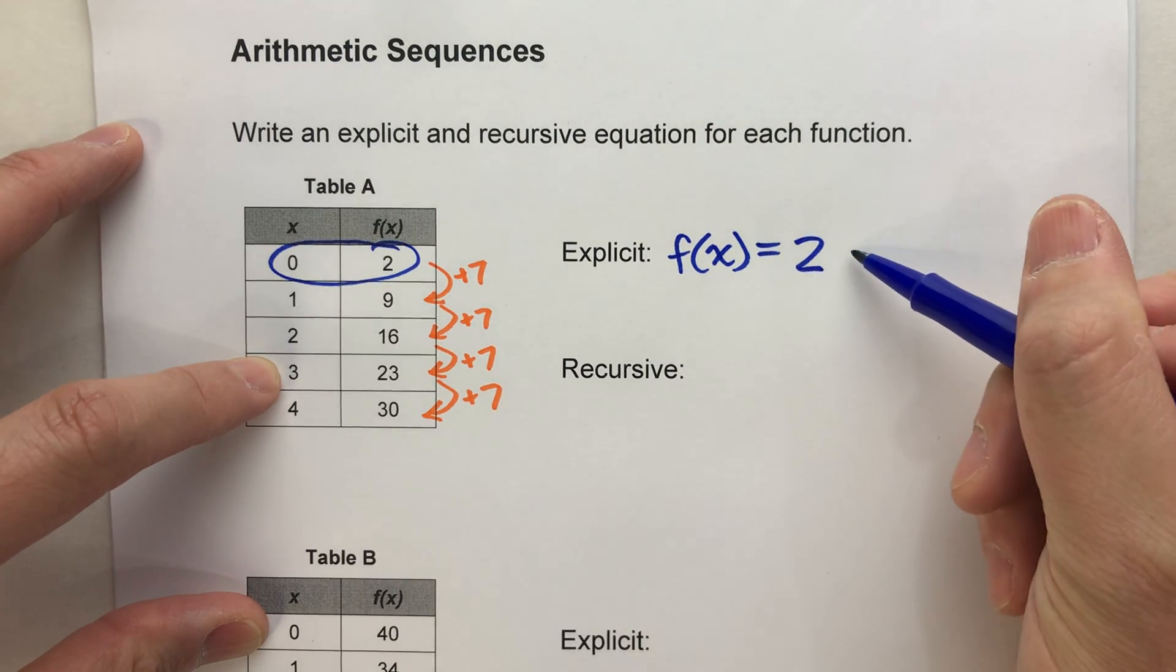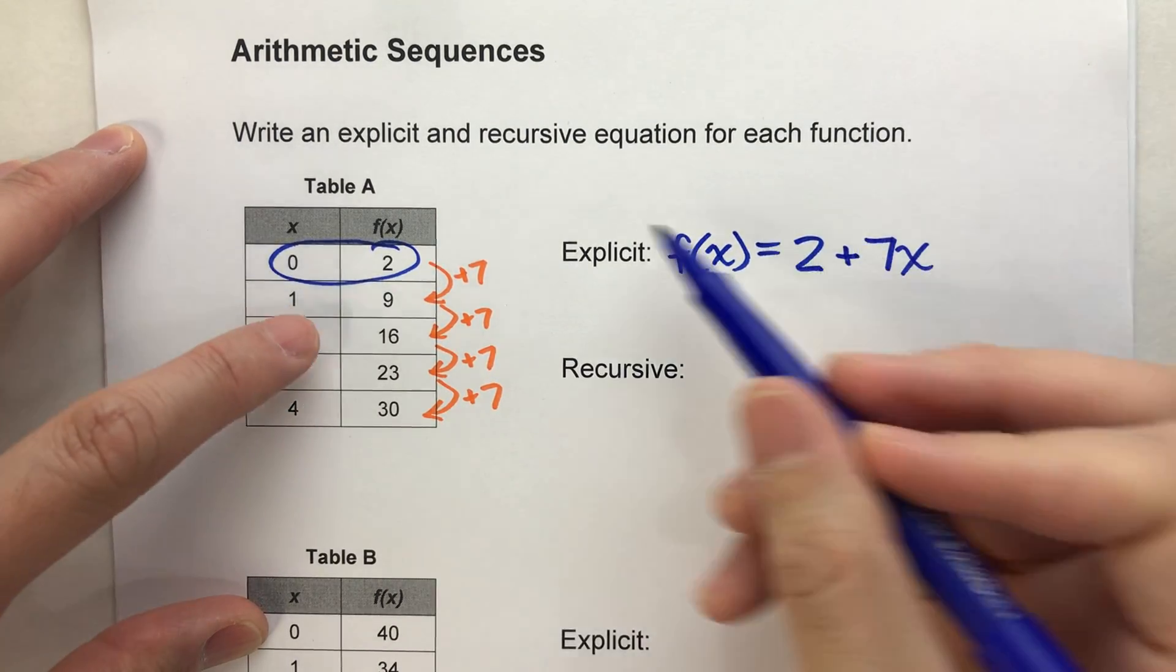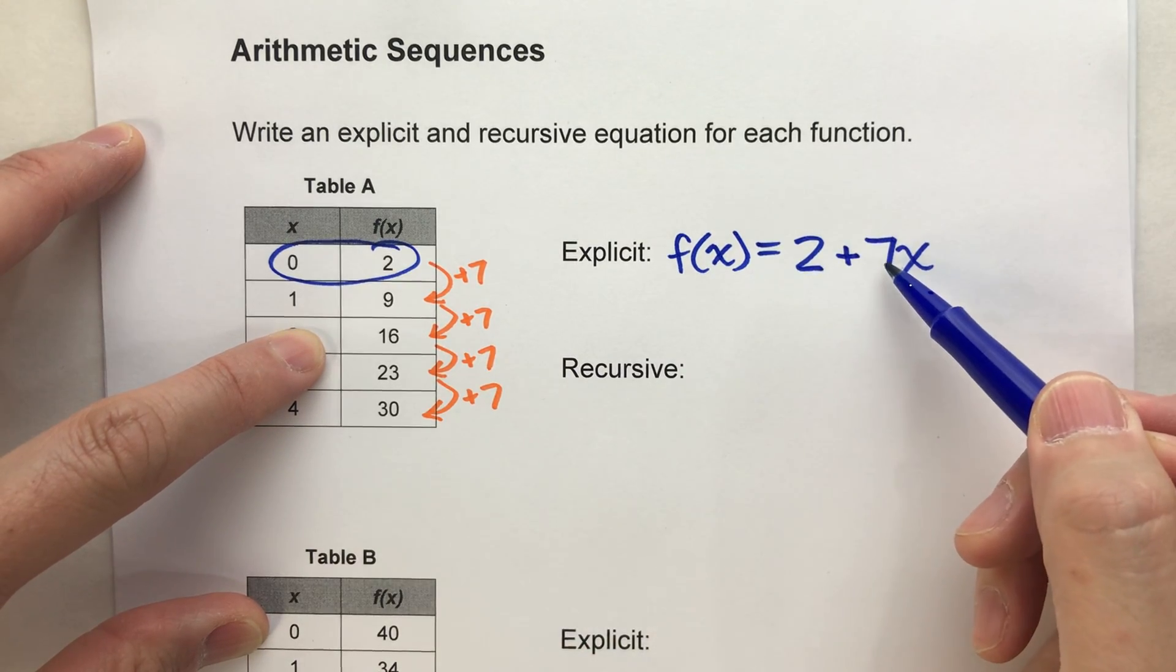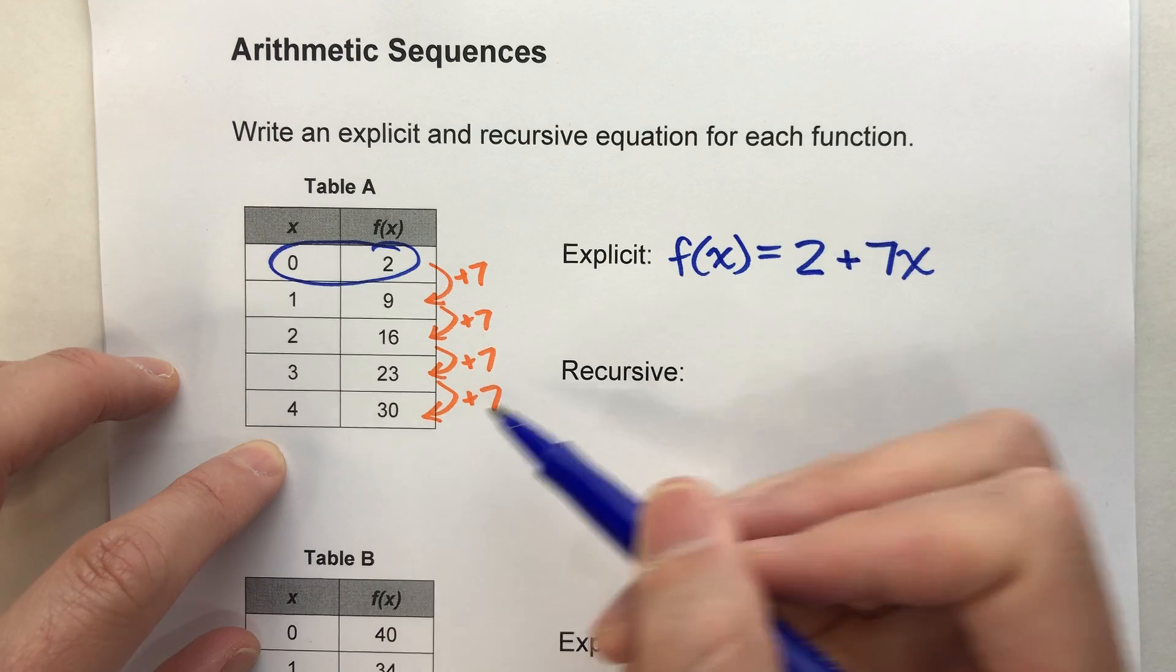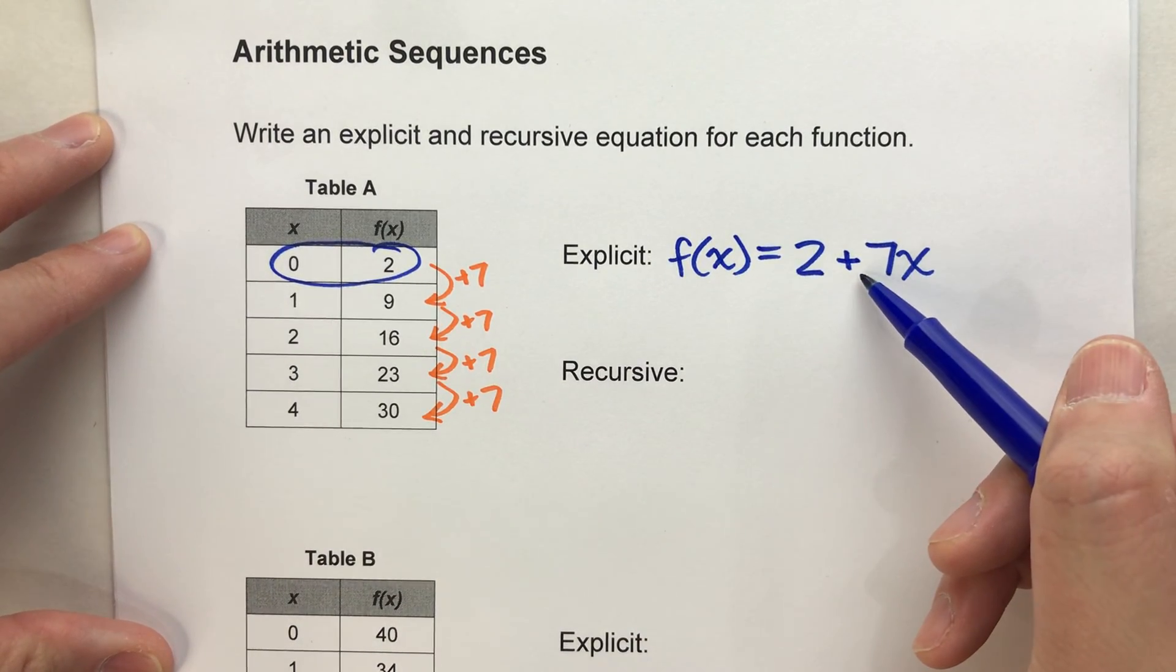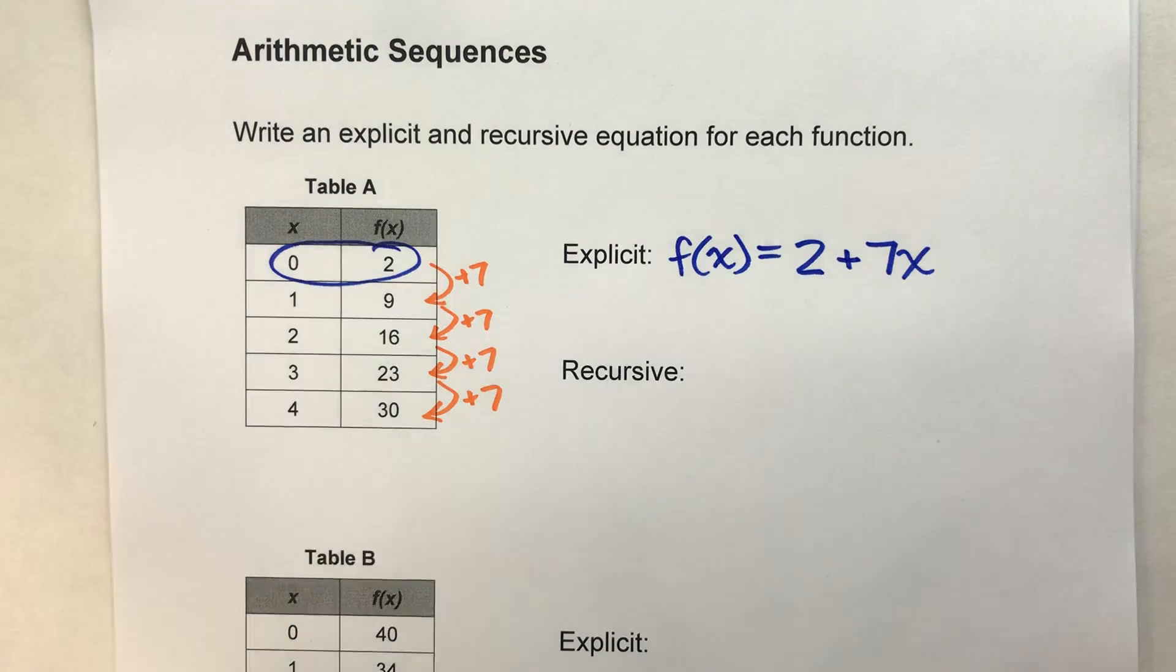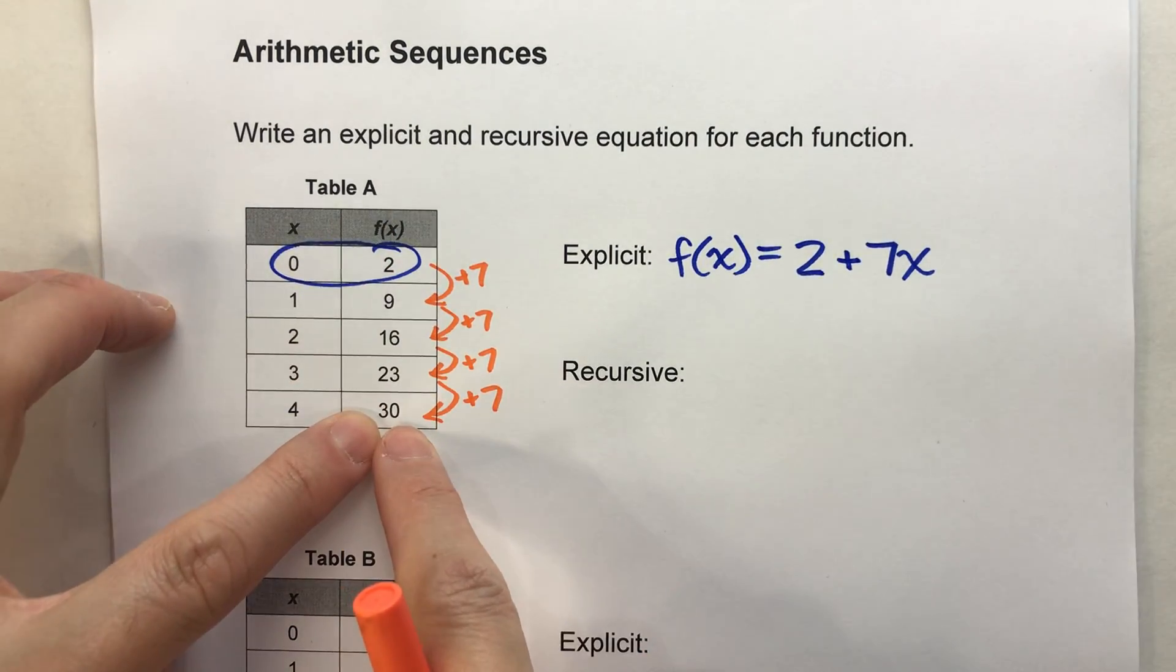So we'll say 2 plus 7 times x because how many 7s we add to it will be based on what value of x we're looking for. So f of x is equal to 2 plus 7x. There's your explicit equation, and we can use that equation to calculate any value of f of x.